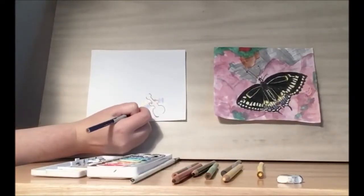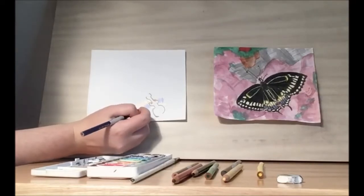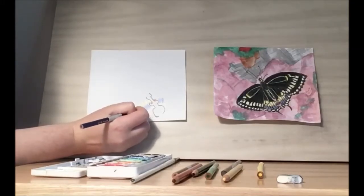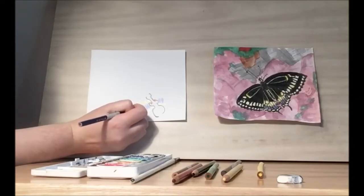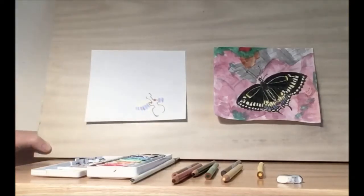They're going to be different thicknesses and shapes. You don't want this to be too uniform because we want to show the movement of the butterfly. So we have one, two, three, four, five, six.